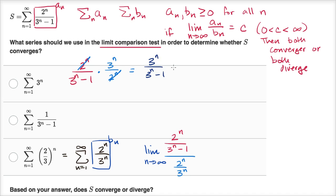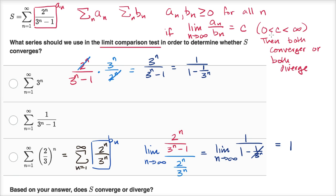We can divide numerator and denominator by three to the N, giving us one over one minus one over three to the N. So the limit as N approaches infinity of one over one minus one over three to the N: as N approaches infinity, one over three to the N goes to zero, so this whole thing approaches one. Since one is clearly between zero and infinity, the destinies of these two series are tied — they either both converge or both diverge. The comparison series is a geometric series with common ratio less than one, so it converges. Therefore, by the limit comparison test, our original series S also converges.